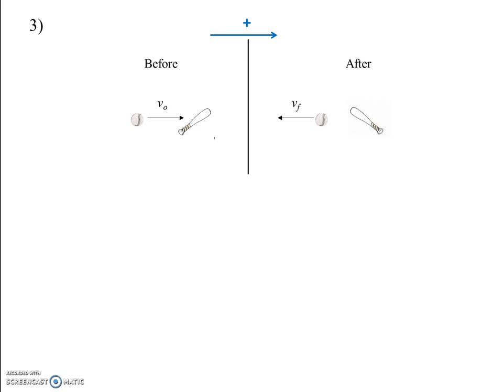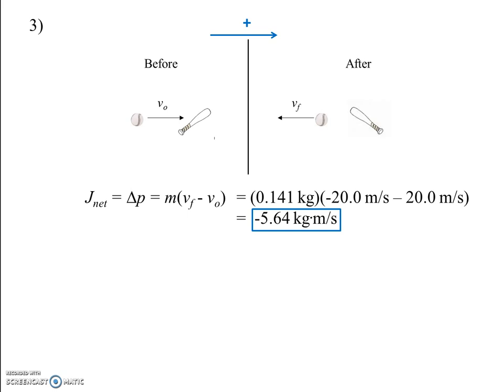When you find the impulse, which is also known as change of momentum — it's mass times the change in velocity — the final velocity has to be negative 20 and the initial is positive 20. So we have negative 20 minus 20, and we get negative 5.64 kilogram meters per second. Since the direction of positive varies, I left the direction in words. If east is positive, the negative sign means west.